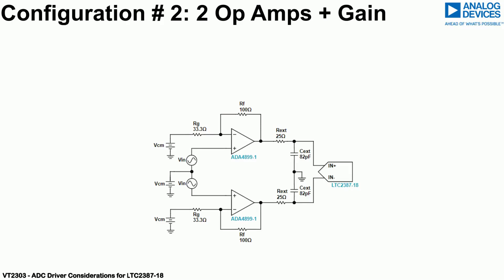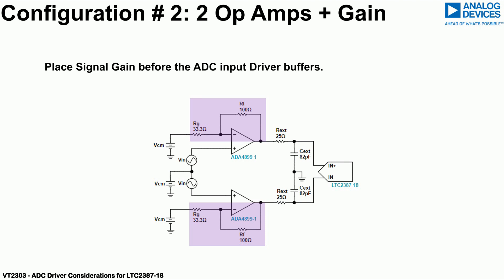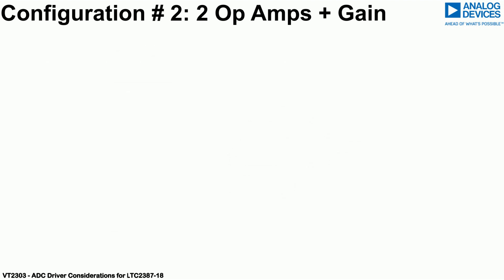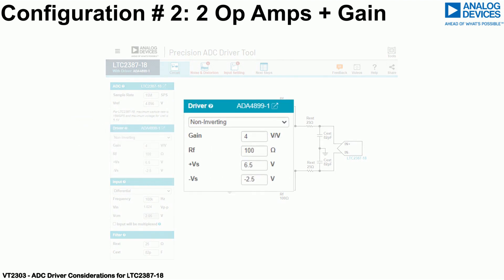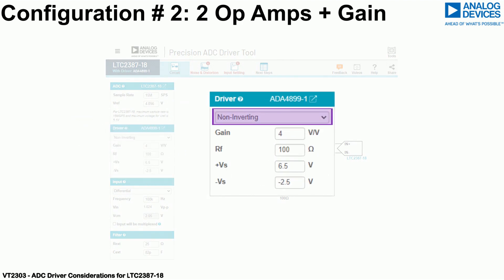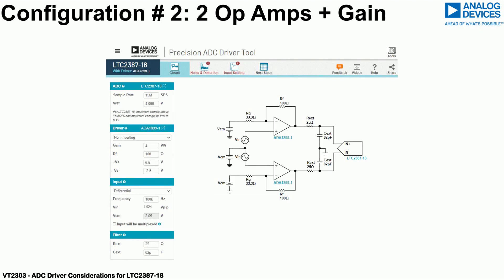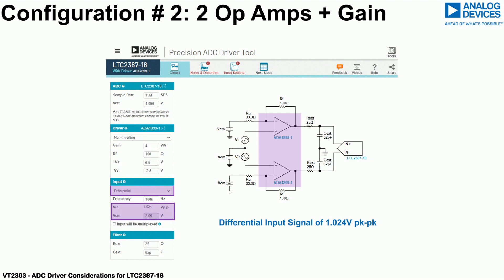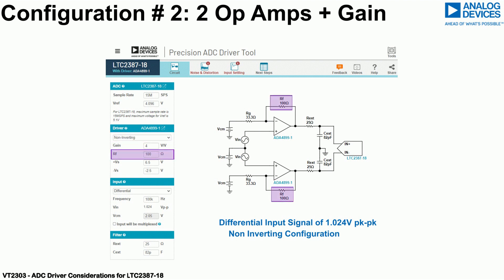The second recommendation is to add any signal chain gain before the ADC input driver buffers. To add a gain of 4 to the ADC driver circuit, select a non-inverting configuration from the driver section of the tool and set the gain to a value of 4 volts per volt. The ADA 4899-1 is now fully configured for a differential input signal of 1.024 volts peak-to-peak, sitting on a common mode voltage of 2.048 volts, in a non-inverting configuration with a feedback resistor of 100 ohms and RG of 33.3 ohms.